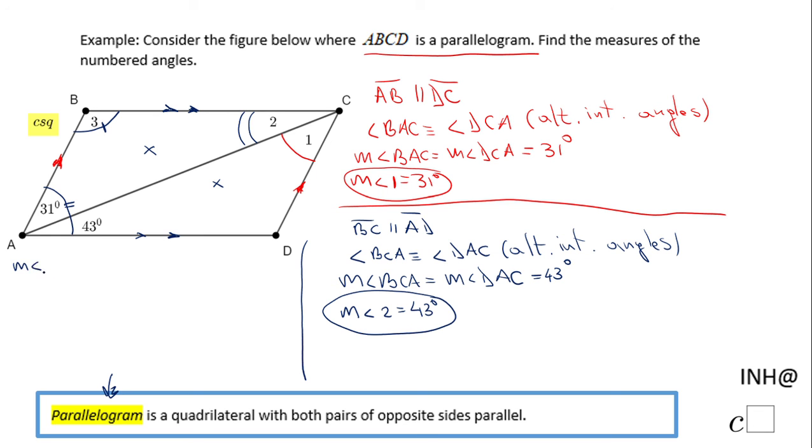The measure of angle B - I can just use one letter there - plus the measure of angle here, I'm going to use three letters, BAD, equals 180 degrees. They are consecutive angles in a parallelogram, so they are supplementary.